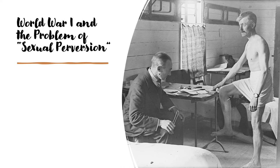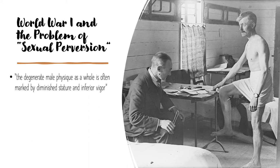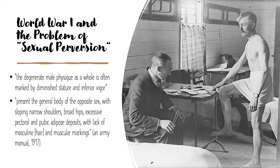There were similar ambiguities within the U.S. military. It was during the First World War that army and navy commanders first became aware of the existence of what they called sexual perversion among sailors and soldiers. Working with the Bureau of Immigration, they began to develop methods of mass screening and examination to identify so-called perverts in the ranks. One manual warned that "the degenerate male physique as a whole is often marked by diminished stature and inferior vigor." Official regulations advised inspectors to watch for recruits who "present the general body of the opposite sex with sloping narrow shoulders, broad hips, excessive pectoral and pubic adipose deposits, with lack of masculine hair and muscular markings."